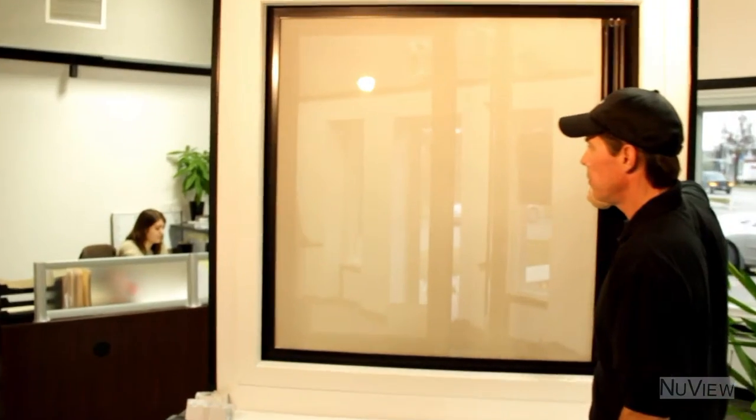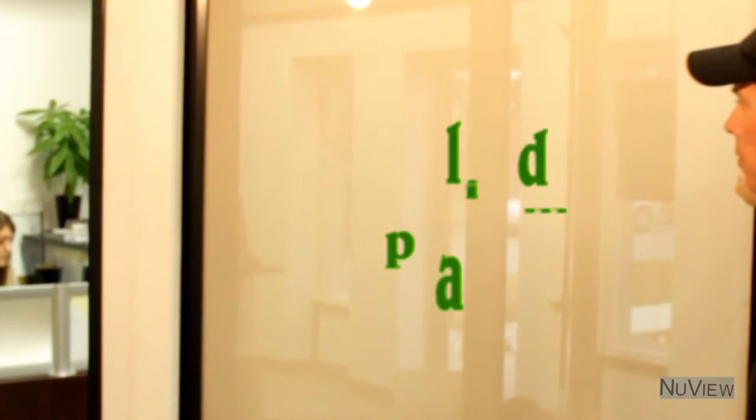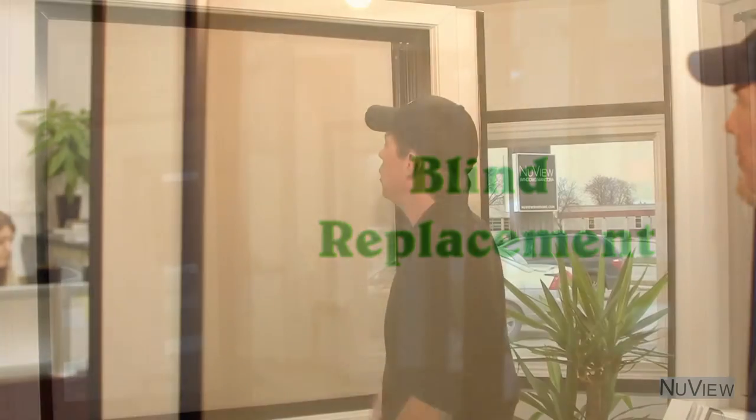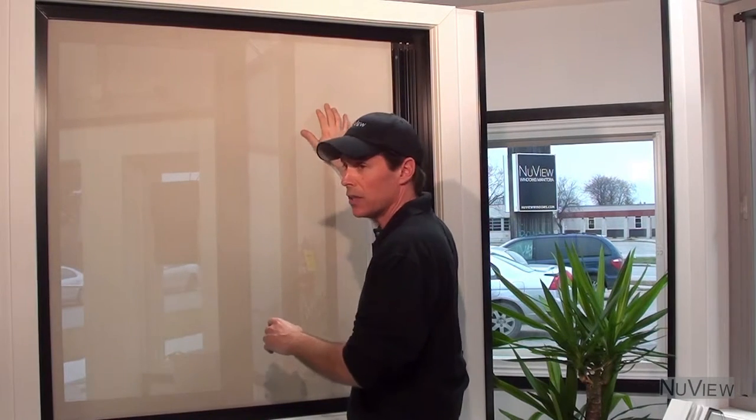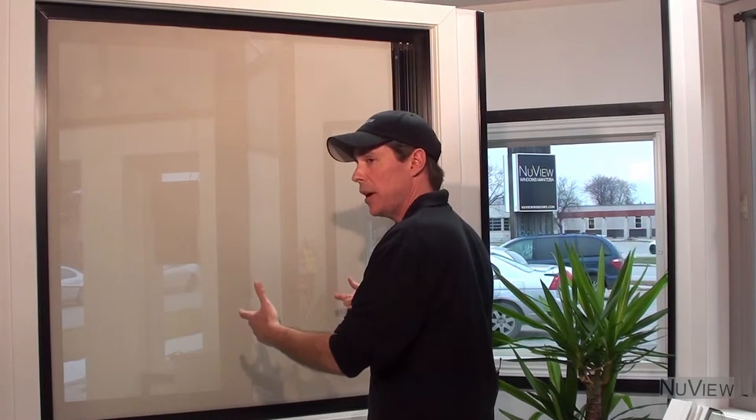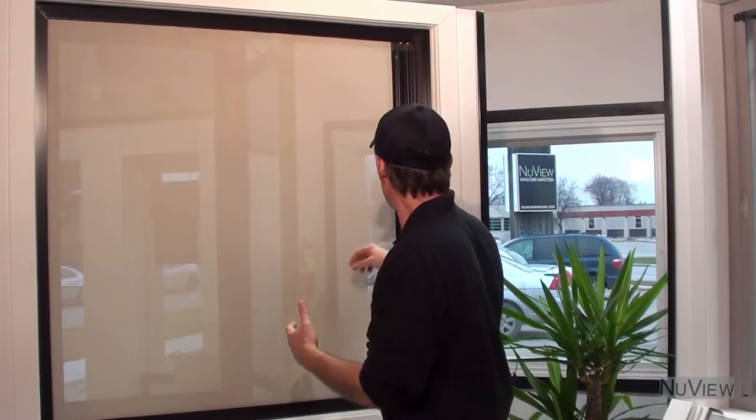If you come home and your cat's hanging on your screen and you've got a big cut across it, it's very difficult for us to repair this. So what we do instead of repairing it, we simply replace the cartridge.